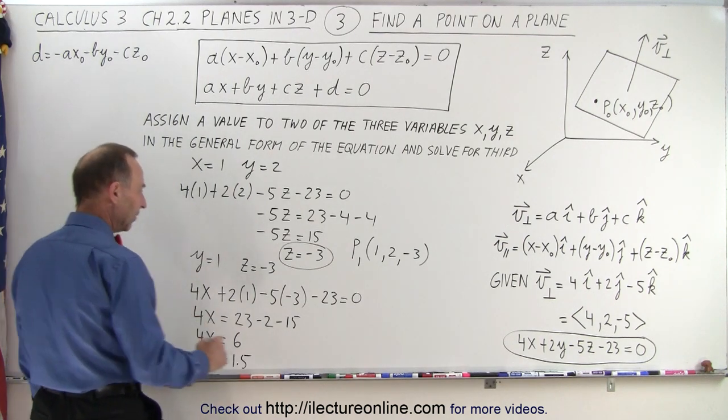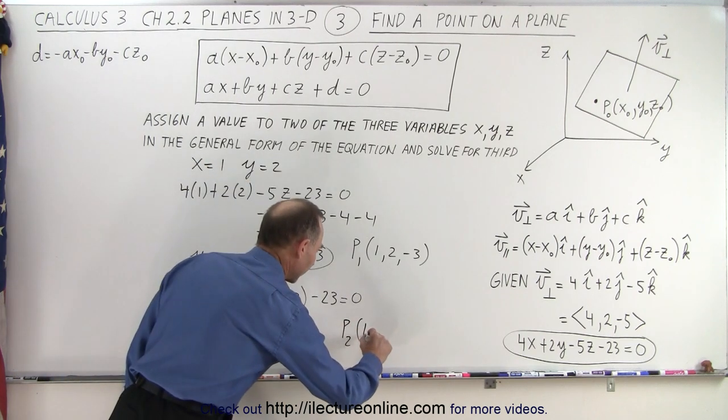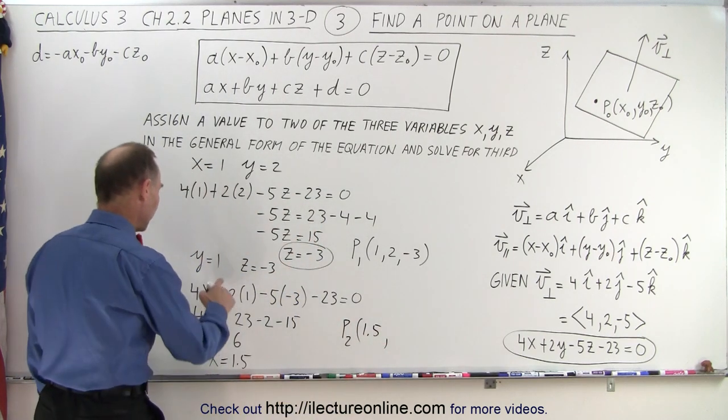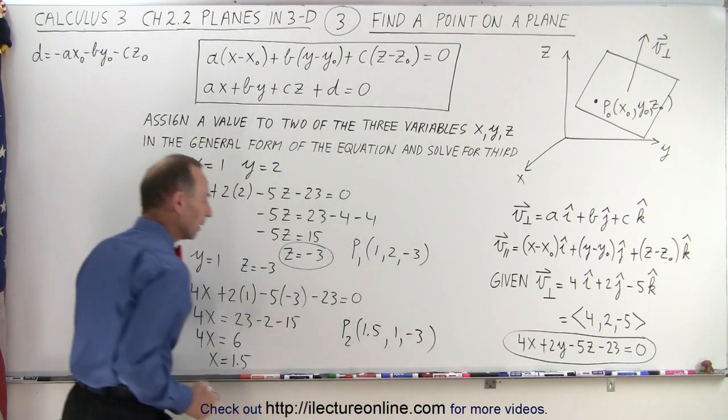All right, and that means that our second point that we found has coordinates 1.5, and then we picked 1 and negative 3. There we go.